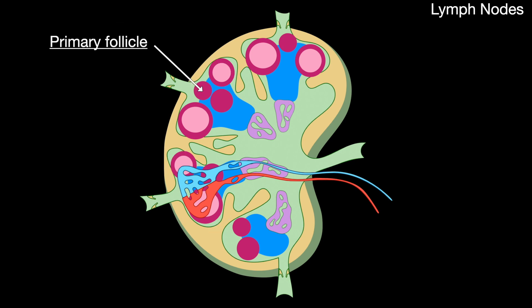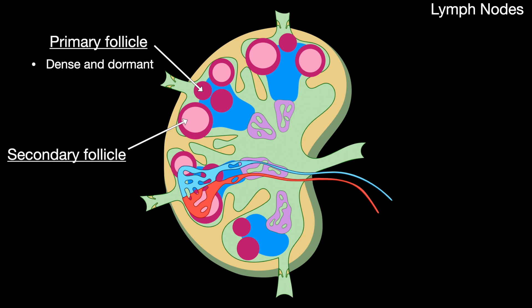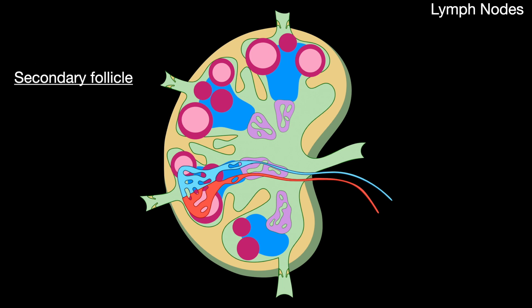The primary follicle is dense and dormant. The secondary follicle is active and contains the mantle zone and the germinal center.